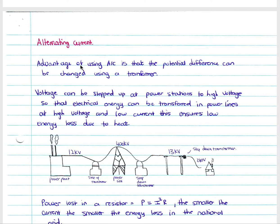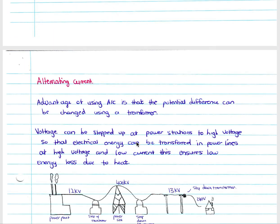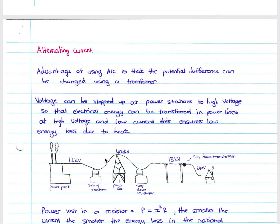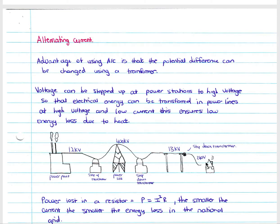Voltage can be stepped up at power stations to high voltage so that electrical energy can be transferred in power lines at high voltage and low current. As we've said, if we increase our voltage we decrease our current. So at power stations we increase our voltage so that we can transfer current in power lines at low current and high voltage, and this ensures low energy loss due to heat.